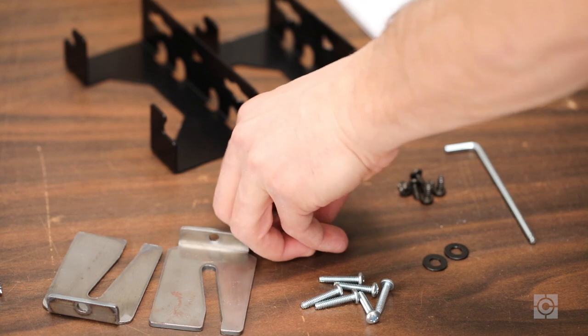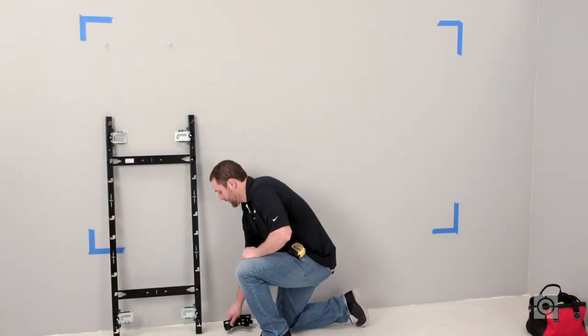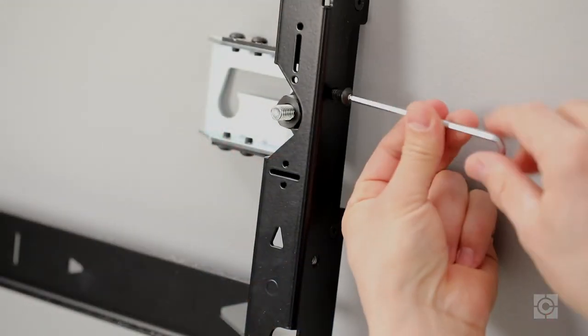Before hanging the mount, use four 1/4-20 by 1/2 inch button head screws to attach two horizontal connector brackets to the appropriate side of the mount.